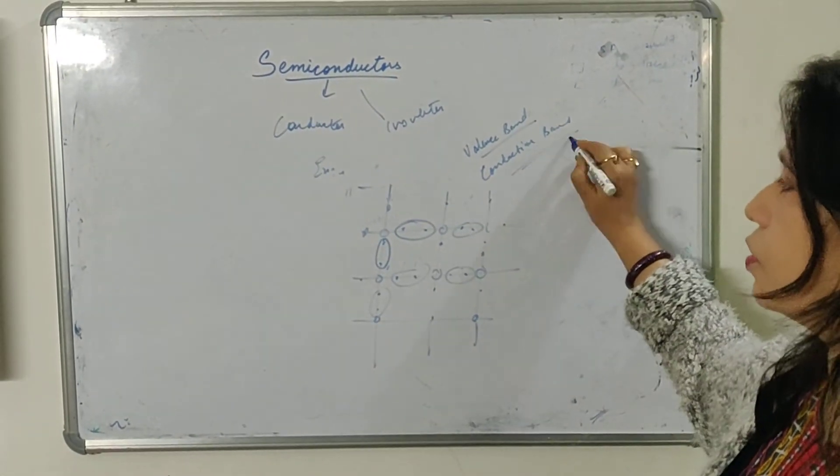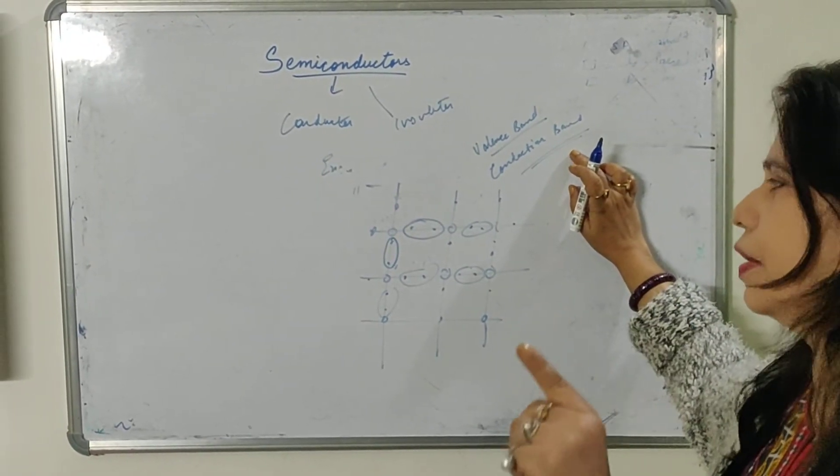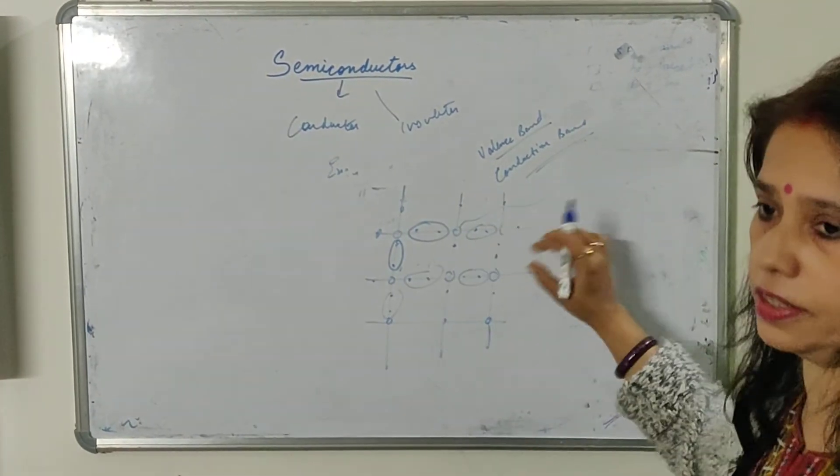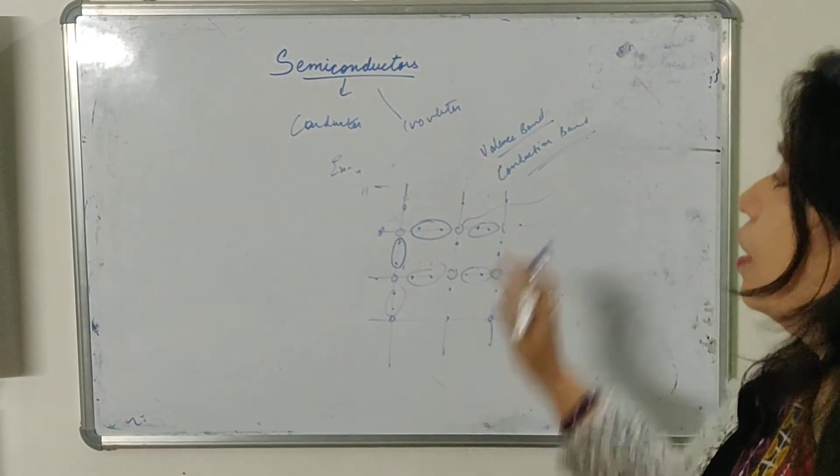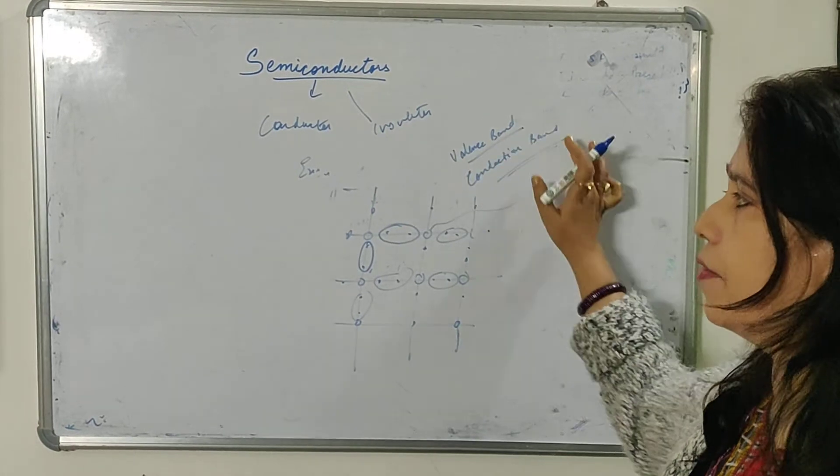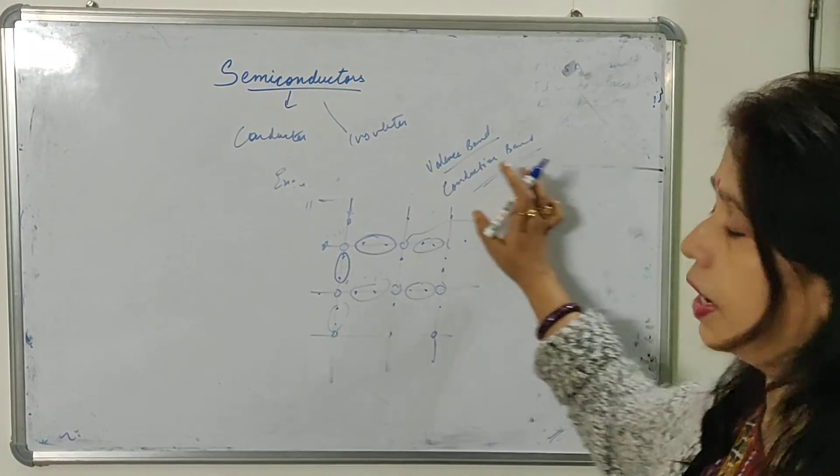In the conduction band, the electrons present in the conduction band, they are having slightly higher energy. So they are able to jump off from the lattice and participate in the conduction of electricity. Now, we will be studying about the energy level diagram of conductor, semiconductor and insulator.